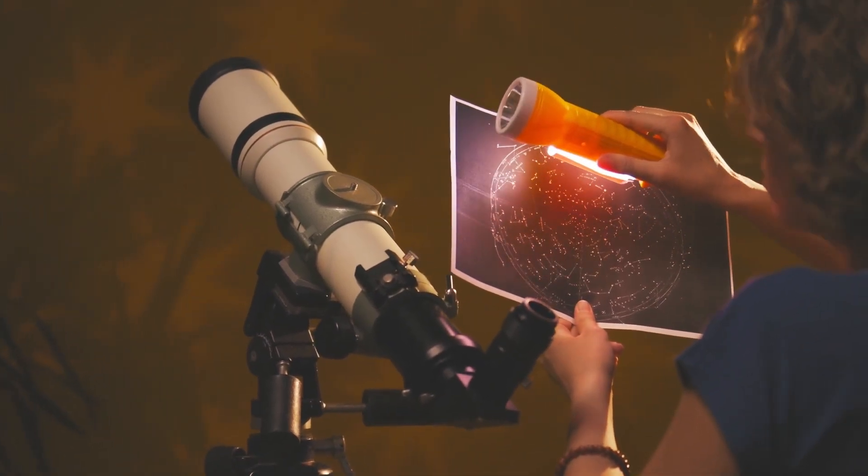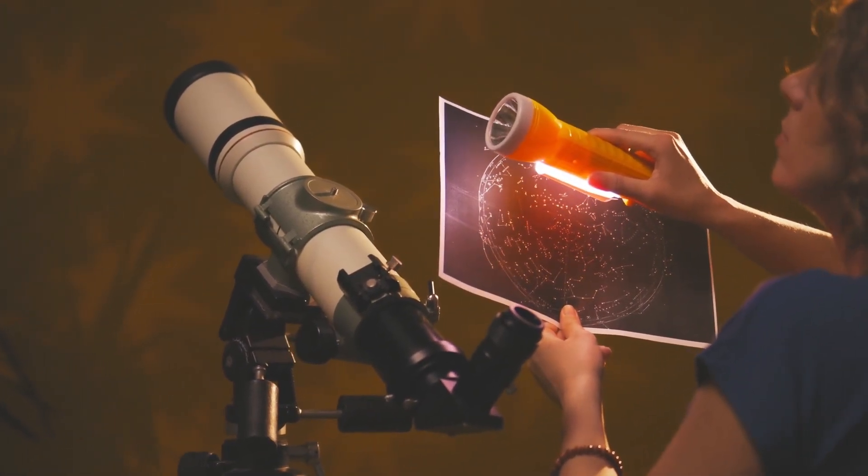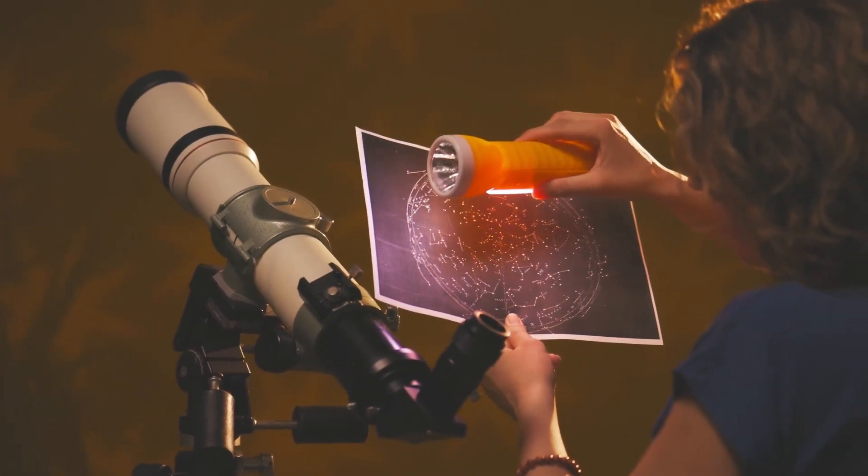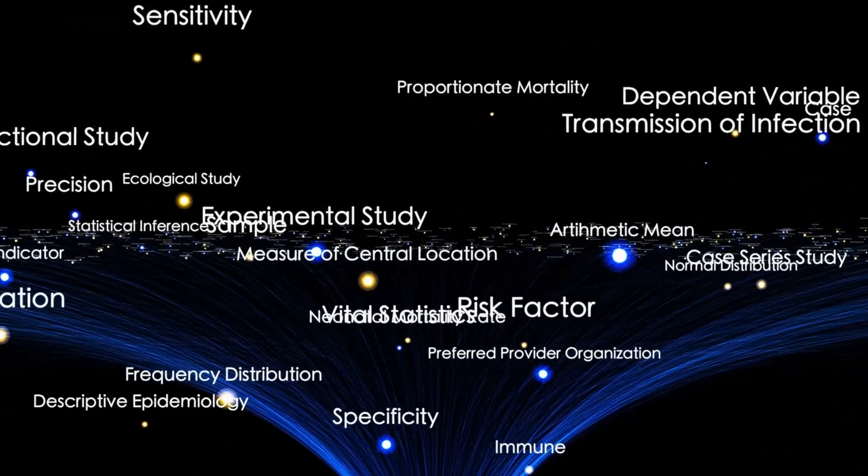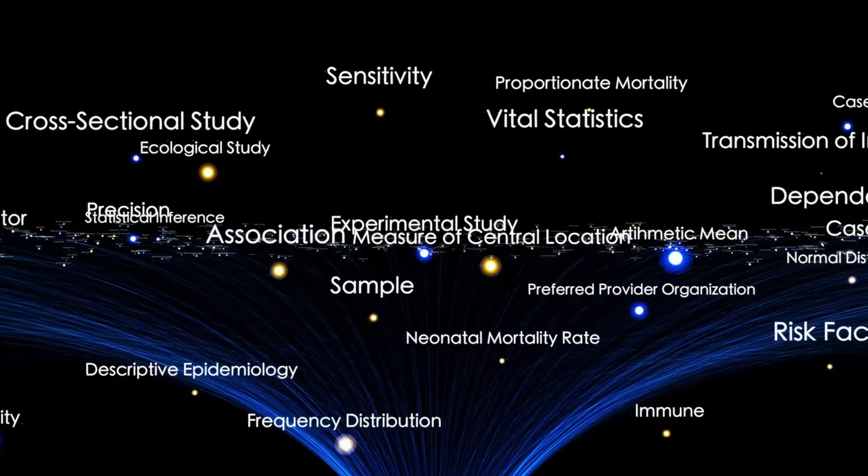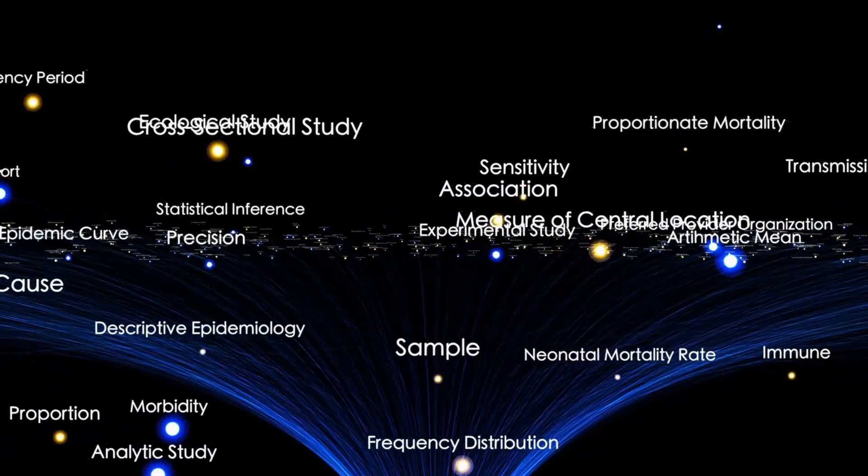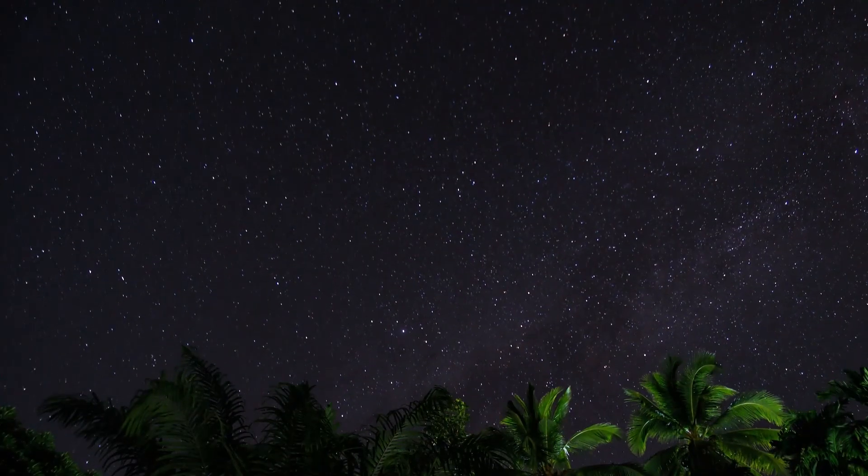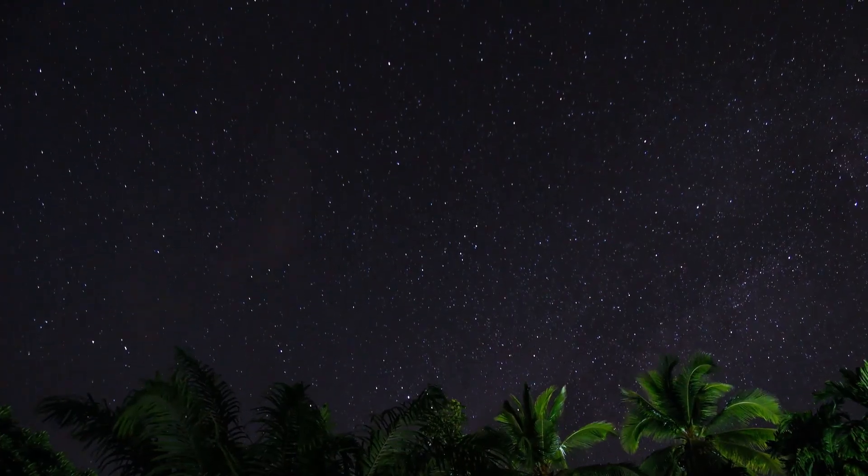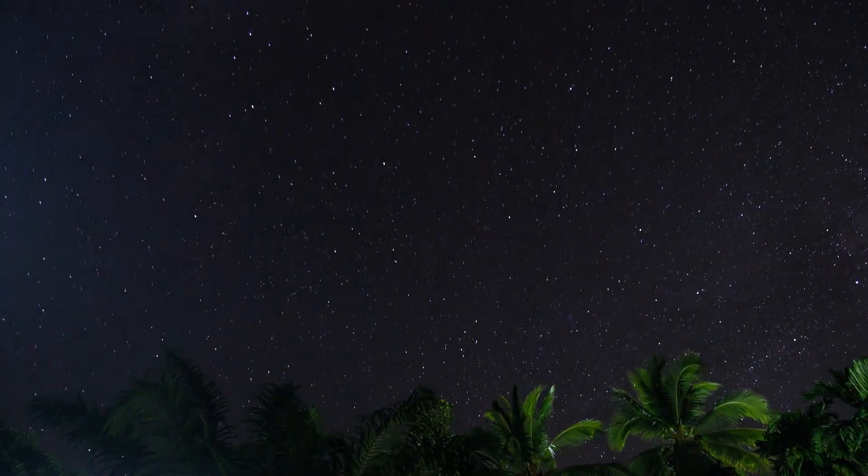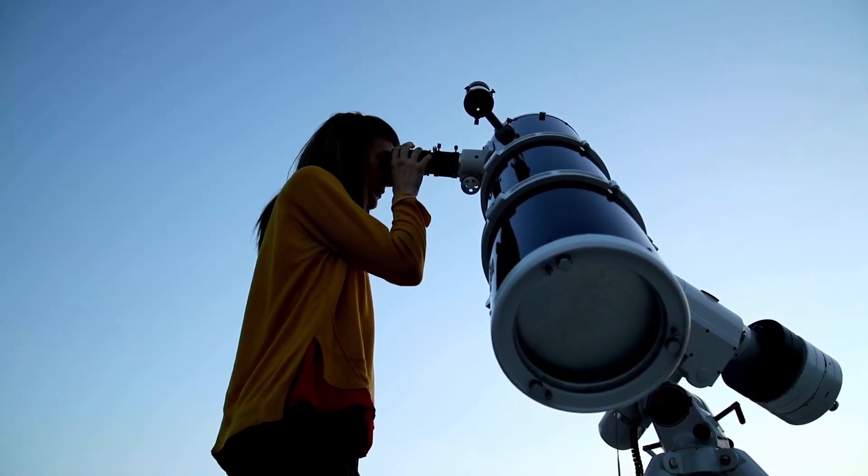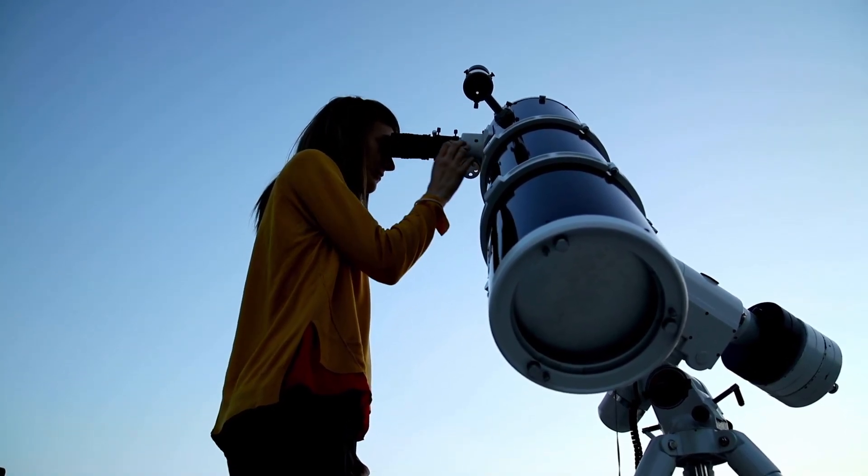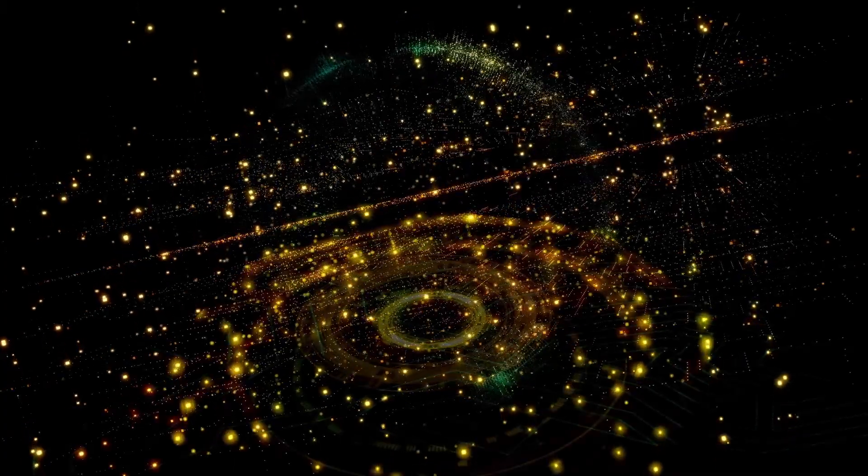Many believed the probe would go quiet beyond this threshold or that its readings would become irrelevant. But in 2018, it detected something unusual: a faint, persistent hum. Initially dismissed as background noise, further analysis revealed it to be a signal, not a communication, but a consistent tone corresponding to the density of plasma outside the heliosphere.